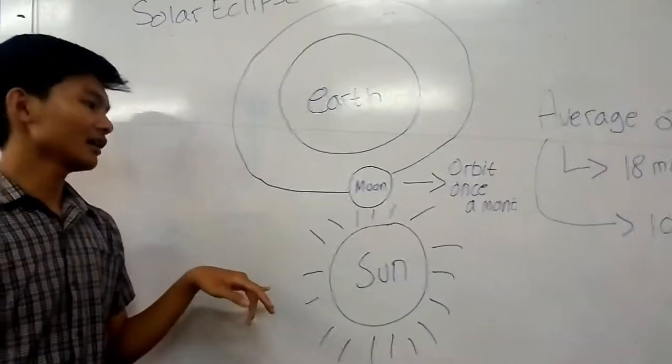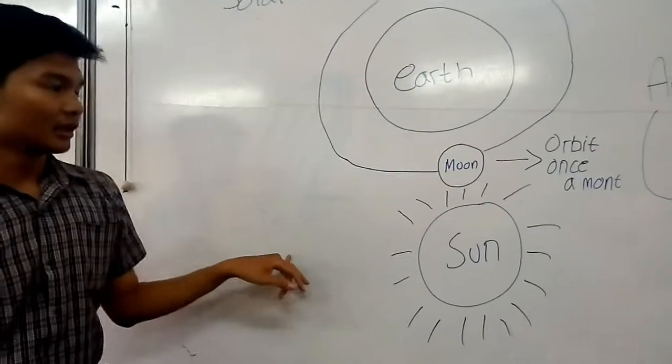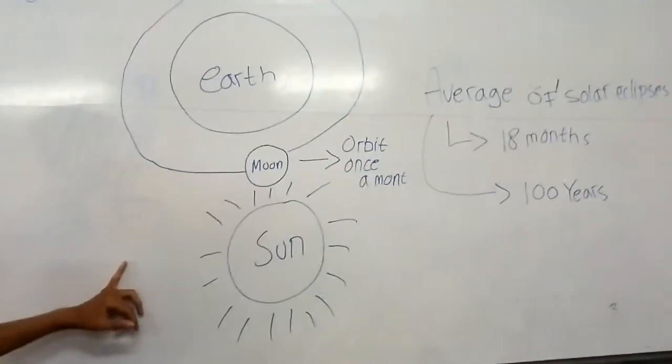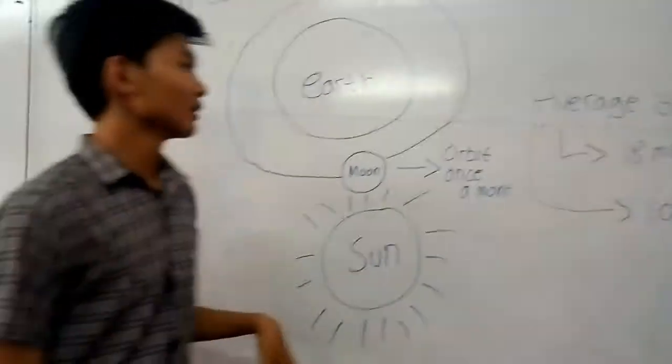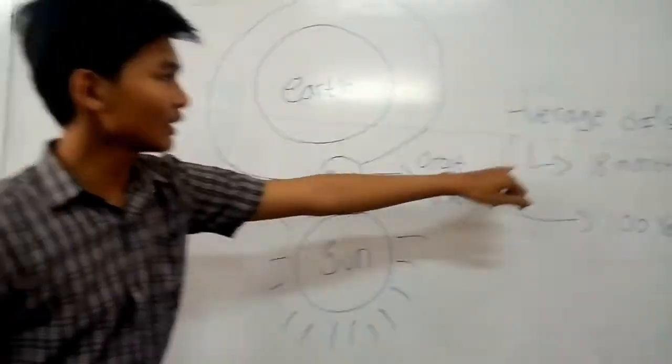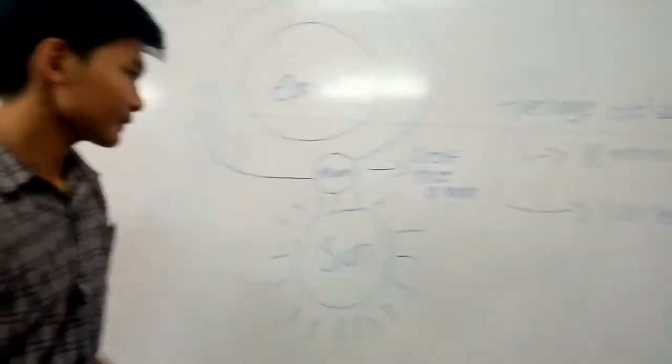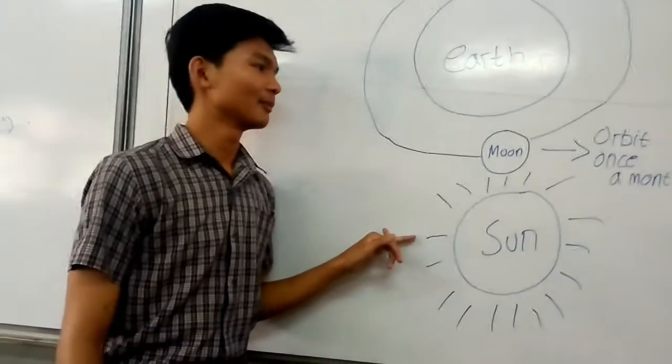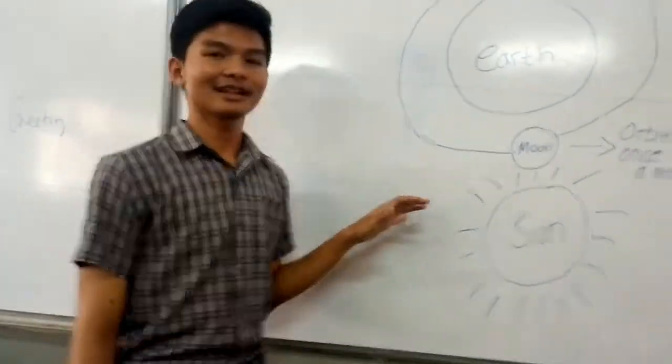There are average of solar eclipse visible in somewhere out of the earth. About 18 months average of the visible solar eclipse happen.